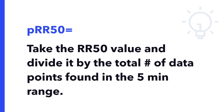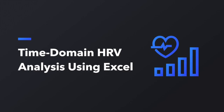Lastly, to derive the PRR50, which represents the percentage of RR50, simply take the RR50 value and divide it by the total number of data points found in that 5-minute range. And that's how you derive time-domain HRV from raw BBI data.